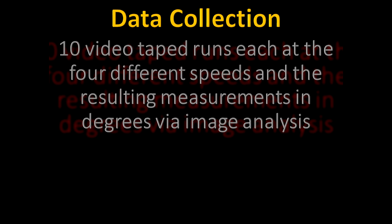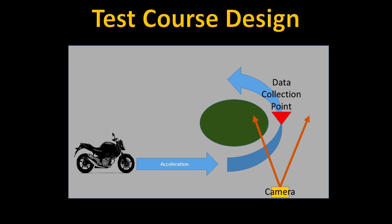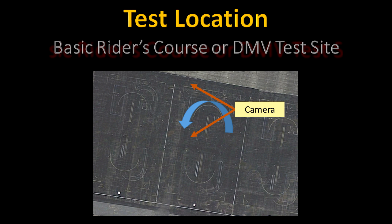The use of 10 trials per bike per target speed should reduce the variance to gain an average for comparison. The test course will be designed for the camera to capture the apex point on the curve. It will also allow for the bike to be on a circuit path to more quickly capture multiple trials at a time. I decided I should use a basic rider course site or a DMV test site, because then there would be no traffic and no one's going to complain about me doing 80 runs around in a circle.